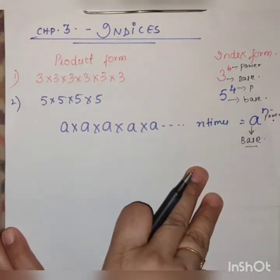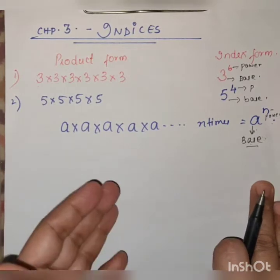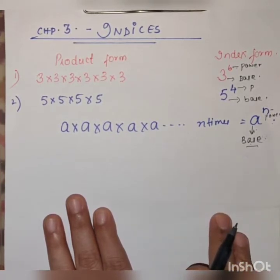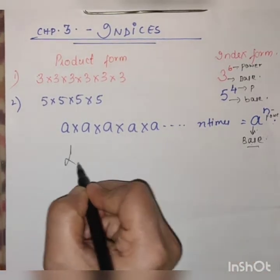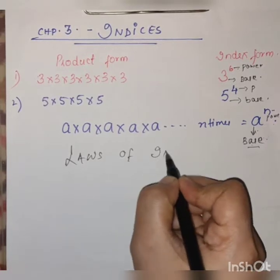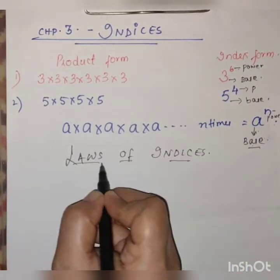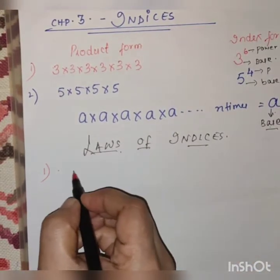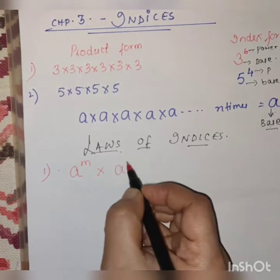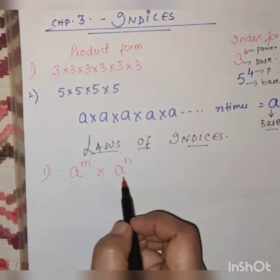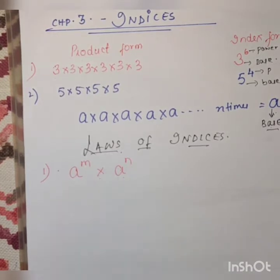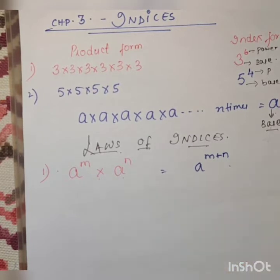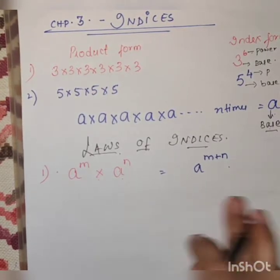This we have already studied in our previous class. So let us study the laws of indices. First law: A raised to M into A raised to N. Here the base is same and the sign is multiplication, so we write A raised to M plus N.